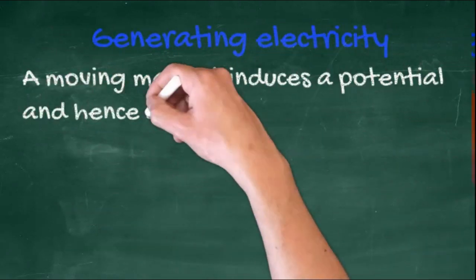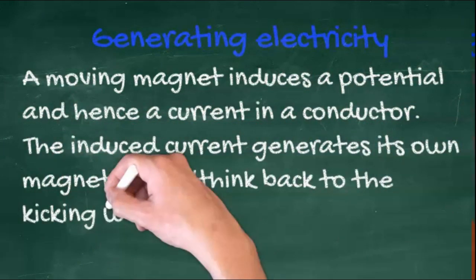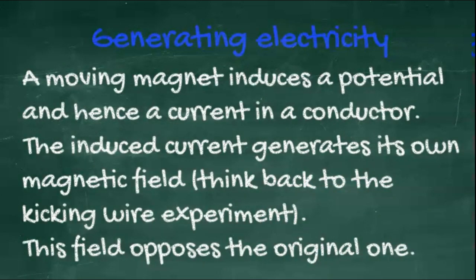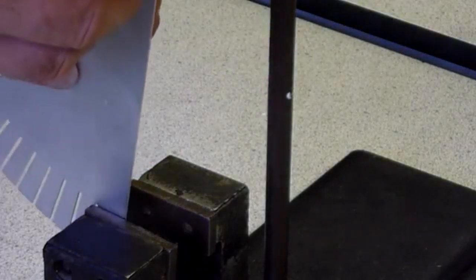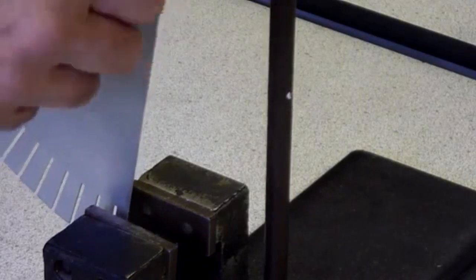However, the induced current itself generates its own magnetic field, and this magnetic field opposes the original one. I'm going to demonstrate this using a plate of aluminium that is set up to swing within a magnetic field. You'll notice that the plate has slits cut into it. Aluminium, of course, is a conductor, but it's not magnetic.